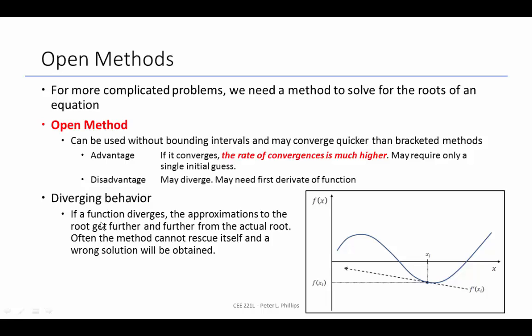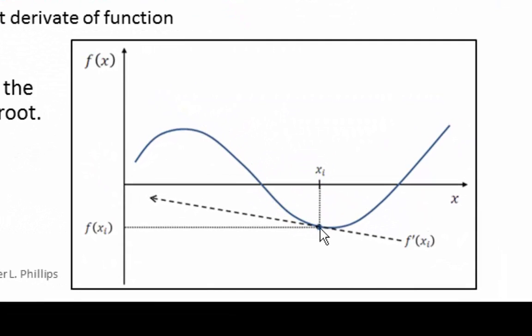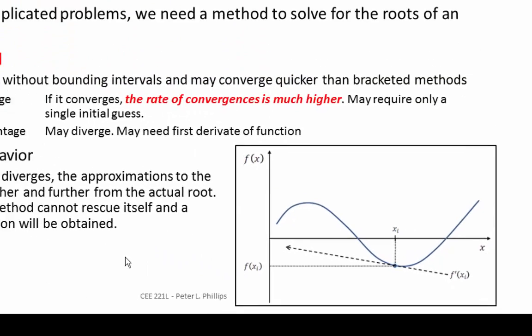Divergent behavior means that if the method is diverging, the approximations keep getting further and further from the actual root. In this depiction, if we're currently at this blue dot and our method sends us way off to the left, we're going further from the root we're seeking, and we may never get back to the actual root. That would be considered divergent behavior.